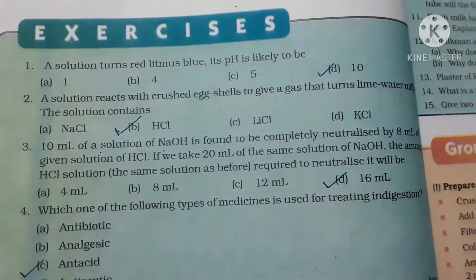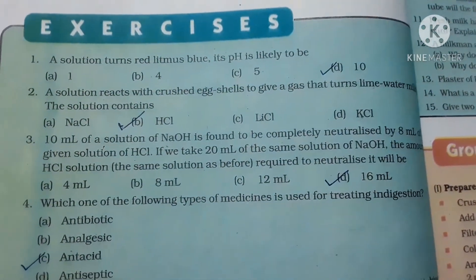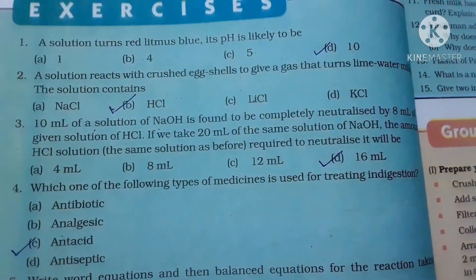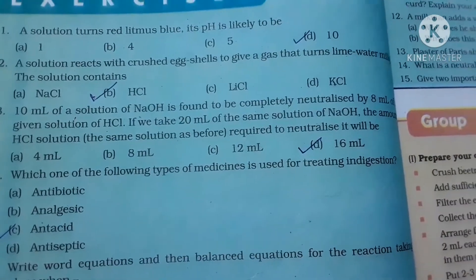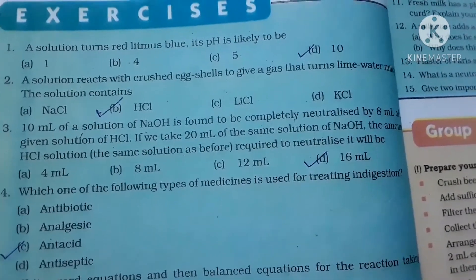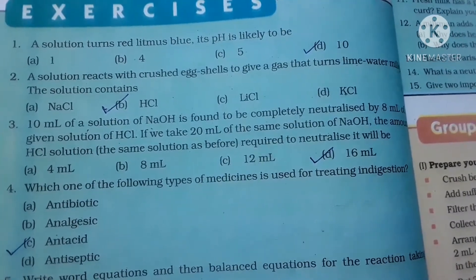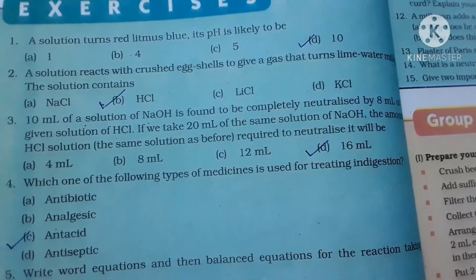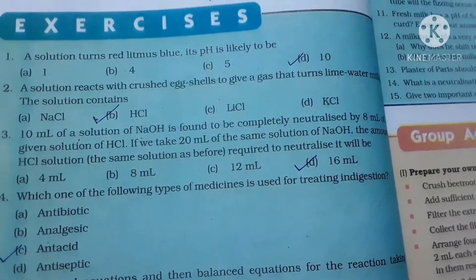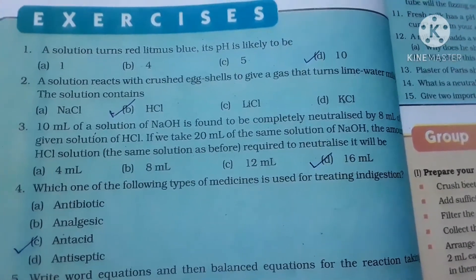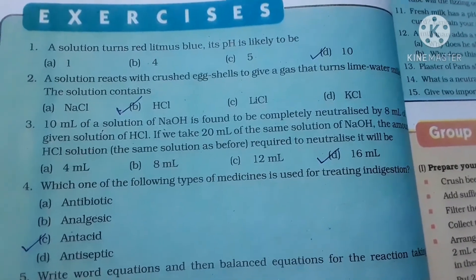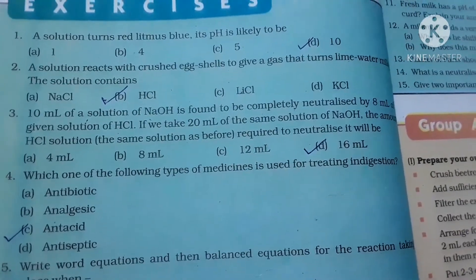Question number 1: A solution turned red litmus blue. Its pH is likely to be — option A: 1, B: 4, C: 5, D: 10. Since the solution turns red litmus blue, it is a base, and the pH of a base is always above 7. So the answer is D, that is 10.